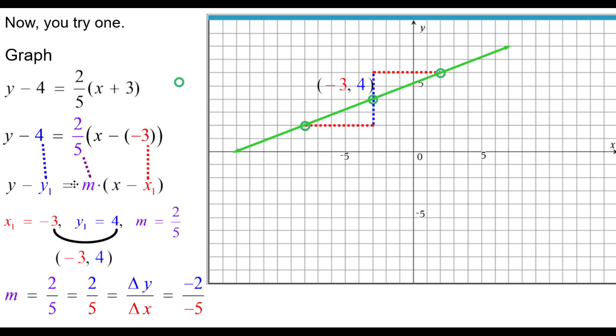We rewrote the equation in general form so that we could pick out x sub 1 as negative 3, y sub 1 as positive 4 and the slope as positive 2 fifths. We plotted negative 3, 4 and from there we went up 2 right 5 and we also went down 2 left 5 using negative 2 divided by negative 5.